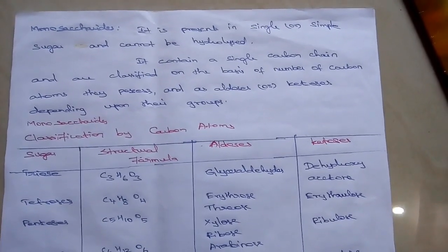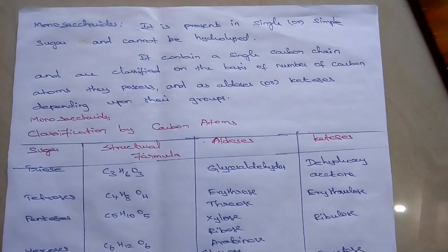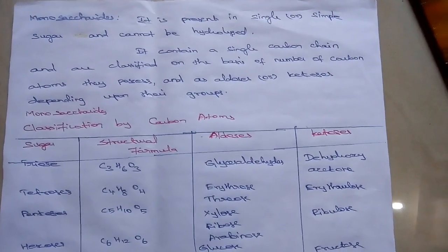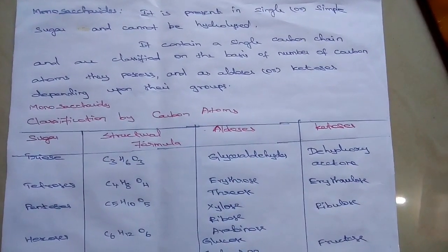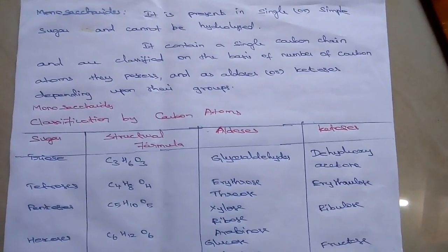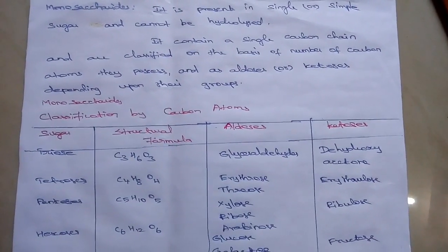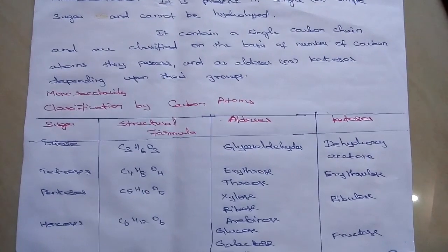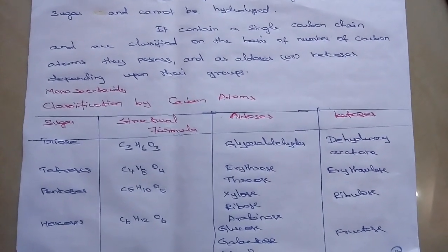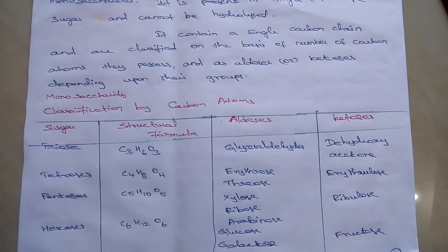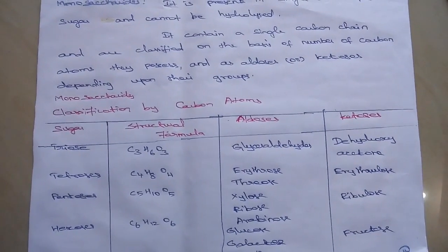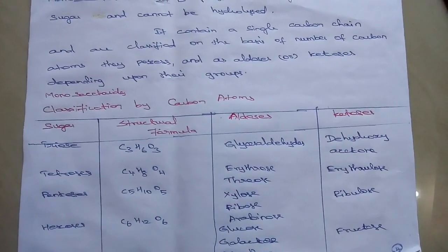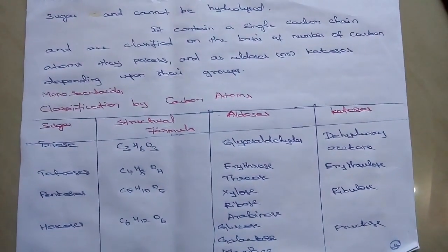First one: Monosaccharides. It is the simplest or single sugar and cannot be hydrolyzed. It contains a single carbon chain and is classified on the basis of number of carbon atoms it possesses, and has aldoses or ketoses depending upon their functional groups. In the given table, the sugar molecule, structural formula, and its aldoses and ketoses are shown. Triose contains three carbon molecules, six hydrogen atoms and three oxygen atoms.